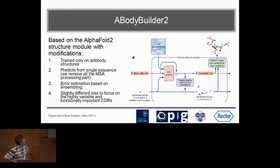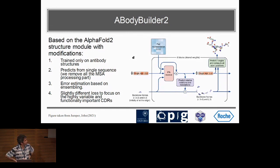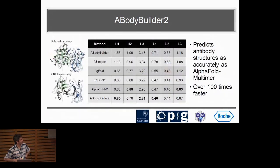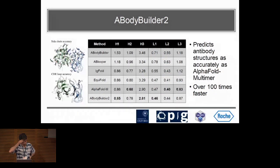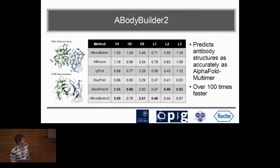We trained it only on one protein family so it can overfit to that protein family as much as it wants. And basically it worked. This is a table where the first four rows are other antibody-specific methods for predicting antibody structures, and the bottom two are AlphaFold-Multimer and ABodyBuilder, which is our method.